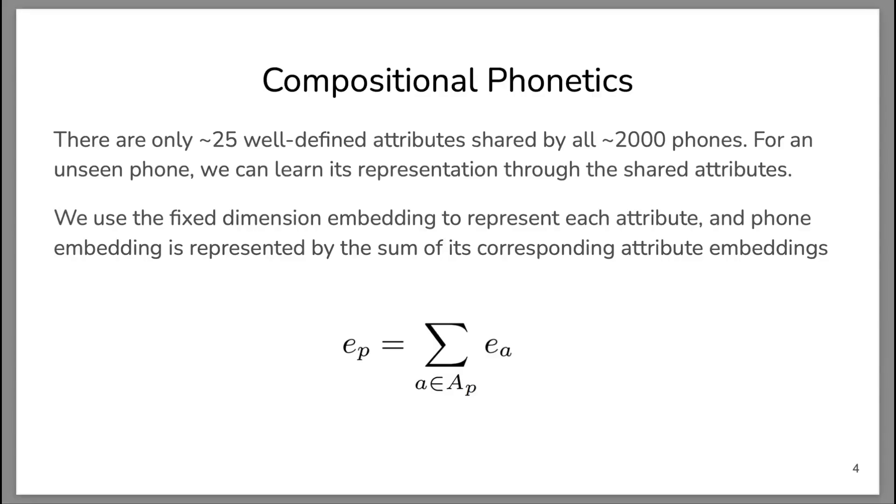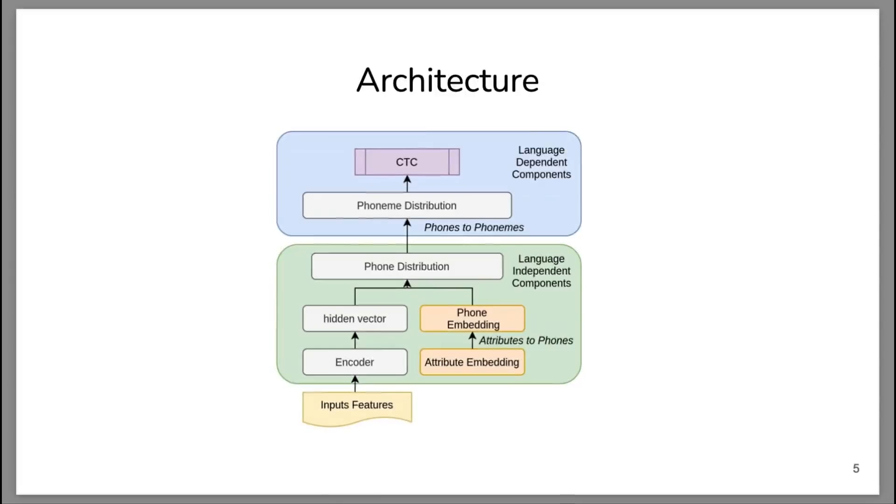We use embeddings to represent these attributes. Here is our architecture. As you can see, we have attribute embeddings, and we then use these attribute embeddings to compute the phone embeddings.